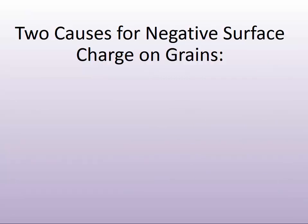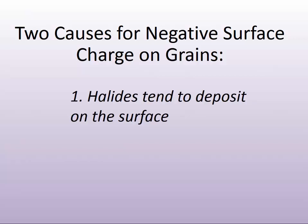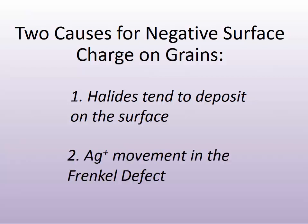This comes from two results. One is that halides tend to deposit more onto the surface where the silver is, so we get an abundance of halide ions on the surface compared to silver. But it also occurs from the fact that silver is diving into the crystal by these Frenkel defects, leaving more halide on the surface and giving it a net negative charge. These are critically important, and you will see how they all play together.